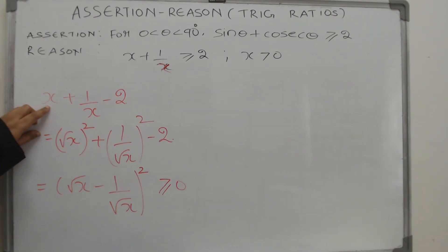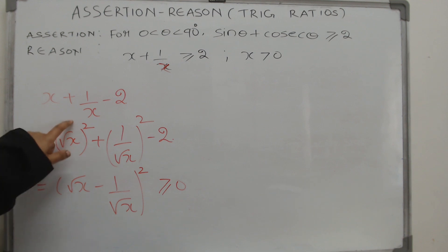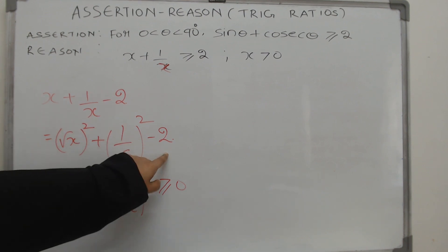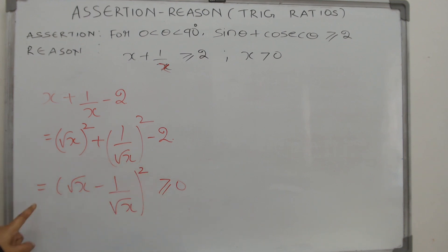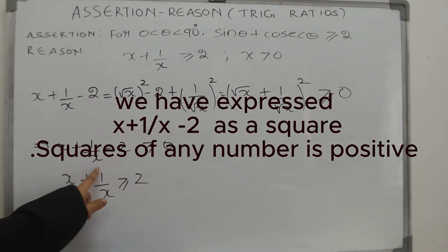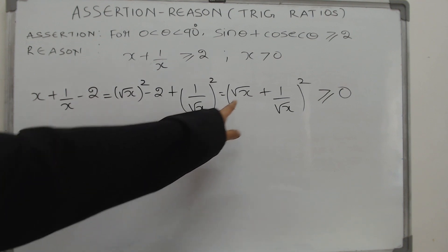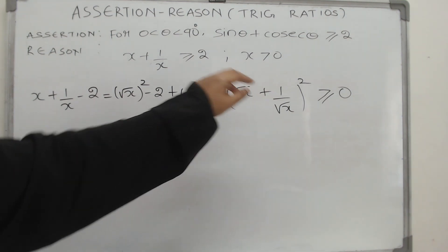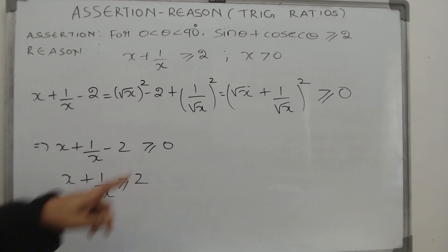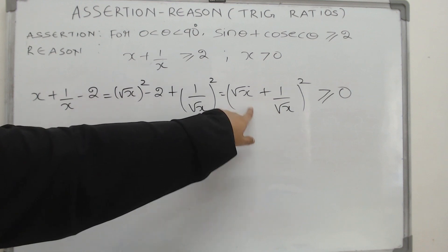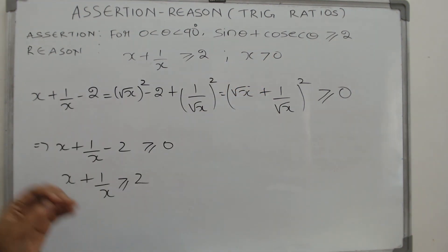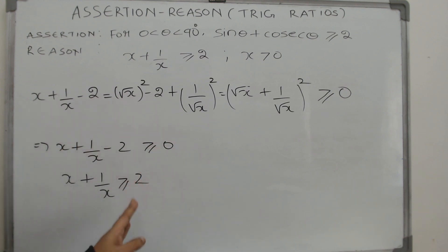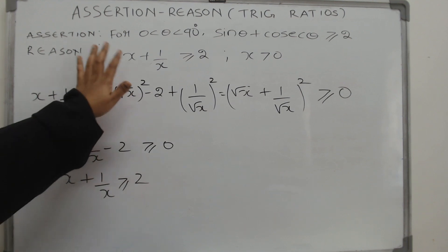The square root of x squared gives x, so we can write this as (√x − 1/√x)², which expands to x minus two plus one by x. So x plus one by x minus two equals (√x − 1/√x)², which is a square of a number. Squares are always non-negative — even if the number inside is negative. Therefore x plus one by x minus two is always greater than or equal to zero, which proves the inequality.